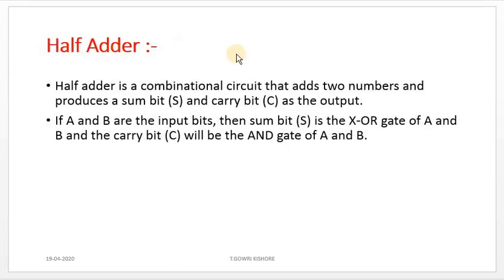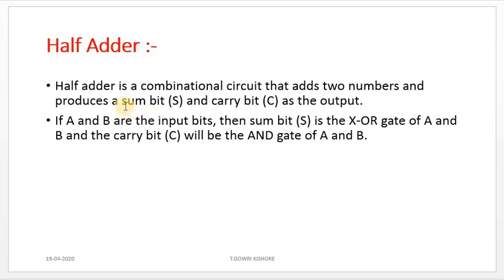Half-adder is a combinational circuit that adds two numbers and produces a sum-bit and carry-bit as the output. The half-adder has two inputs and two outputs. The outputs are represented as sum and carry.